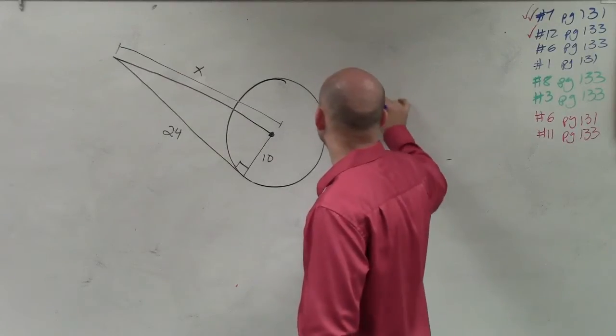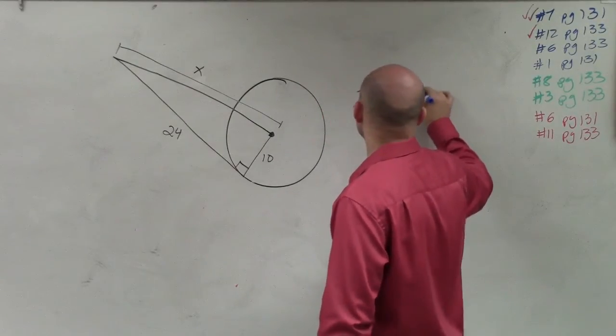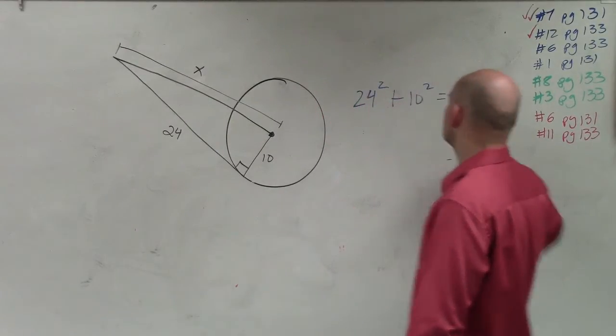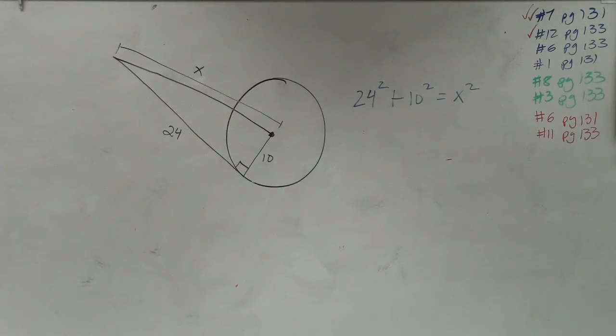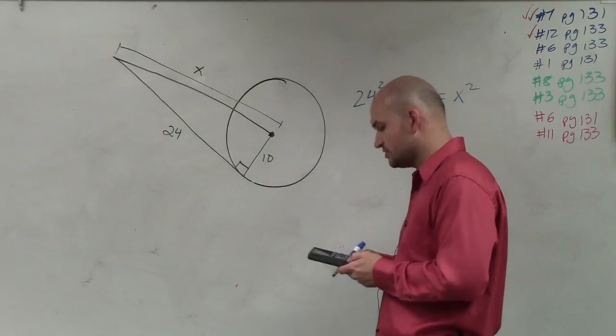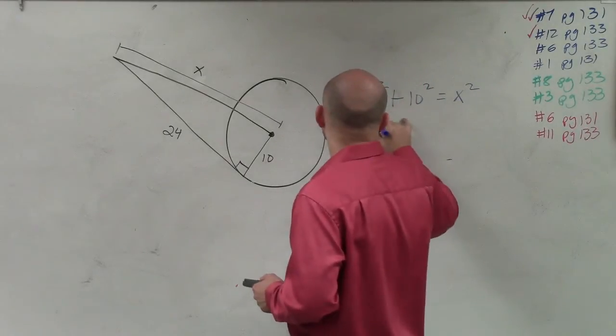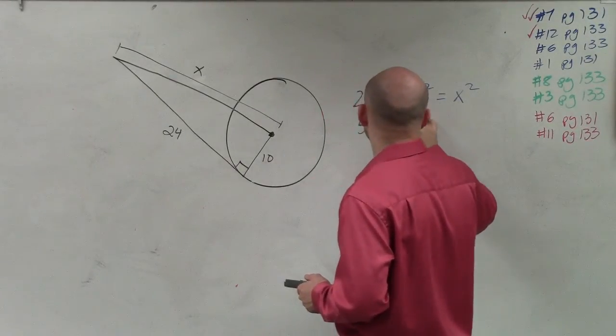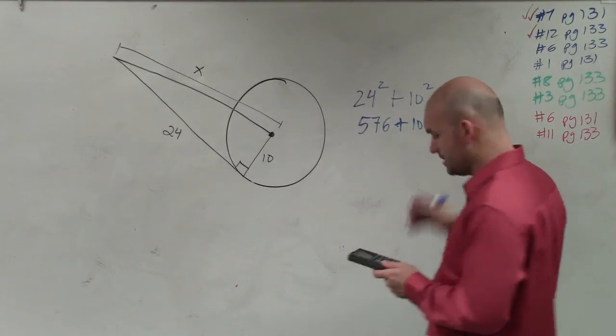So in this case, I'm going to do 24 squared plus 10 squared equals x squared. Now, 24 squared, I do not know off the top of my head. So I'm going to calculate 24 squared, and I get 576 plus 100 equals x squared.